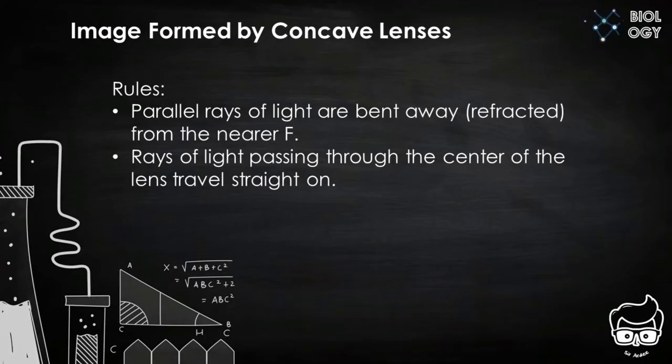Let us now talk about the image formed by concave lenses. Still, we have some few rules to follow. First, parallel rays of light are bent away or refracted from the near F point. Second, rays of light passing through the center of the lens travel straight on.